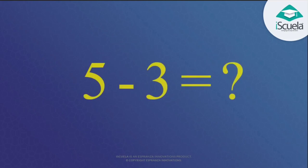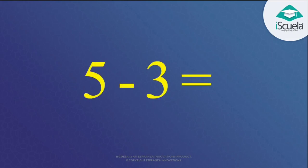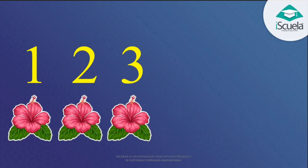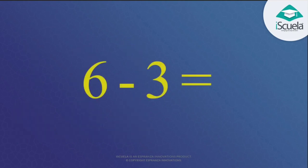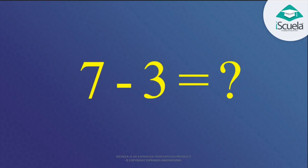5 minus 3 is equal to what? 5 minus 3 — count: 1, 2. That means 5 minus 3 is equal to 2. Next: 6 minus 3 is equal to what? 6 minus 3 — count: 1, 2, 3. So 6 minus 3 is equal to 3. Good, very good!